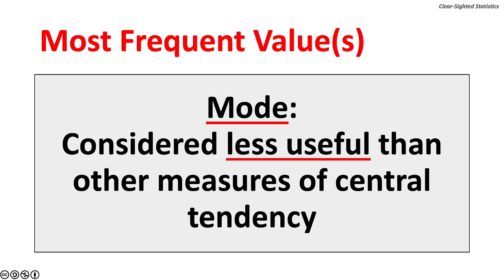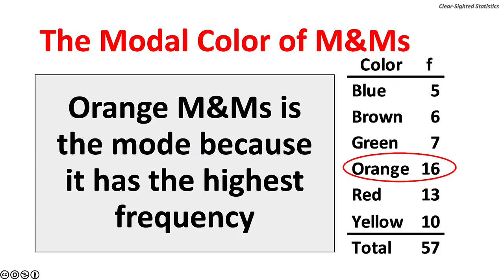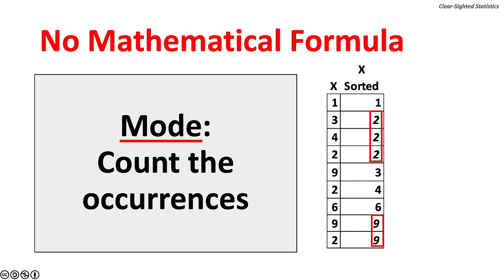The mode is considered less useful than other measures of central tendency. Here is an example of the mode using M&Ms. Color is a nominal variable; color frequency is a ratio variable. The mode is the most frequently occurring color. With 16 orange M&Ms in an average bag, orange is the mode because it has the highest frequency. There is no mathematical formula for the mode — simply count the occurrences.